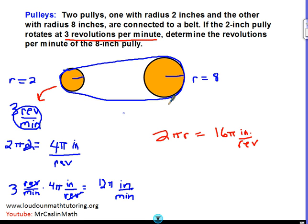3 times 4π equals 12π inches per minute. So both of these, they travel at different angular speeds, but their linear speed is both 12π inches per minute. Now we have to figure out if this one's covering a distance of 12π inches per minute.